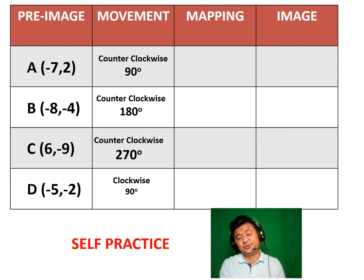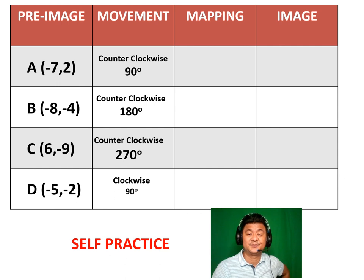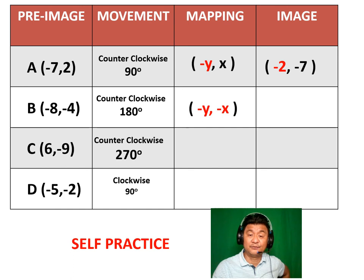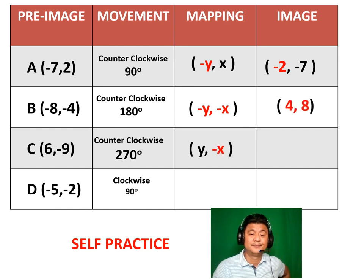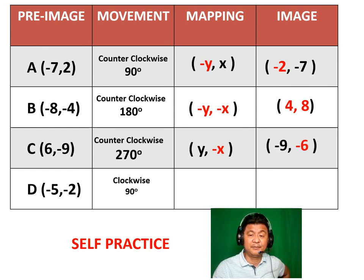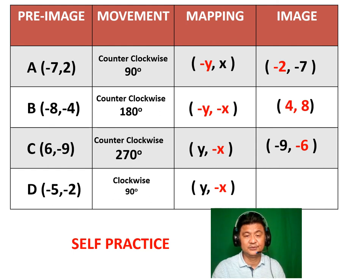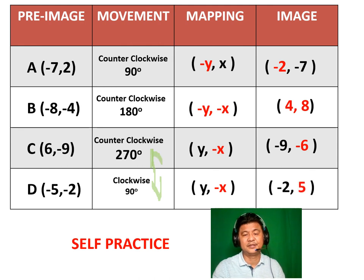Now you're ready to practice on your own. Pause first, and then play the video to check your answers. The formula (negative Y, negative X) gives (4, 8). (Y, negative X) gives (negative 9, negative 6). Formula is (Y, negative X) because these two are the same. That becomes (negative 2, 5).